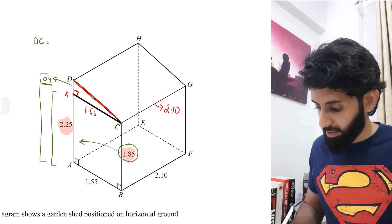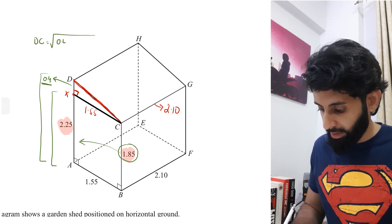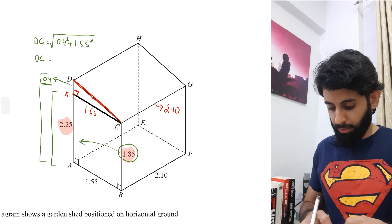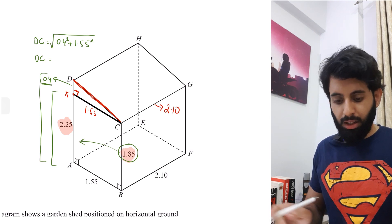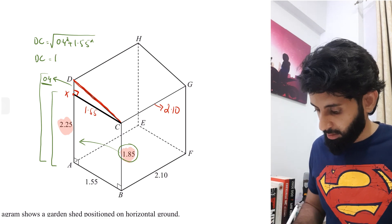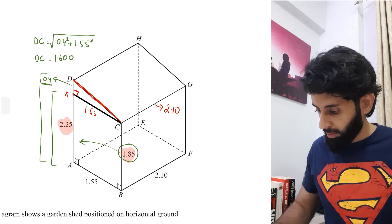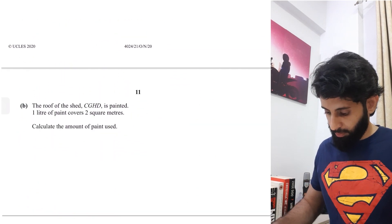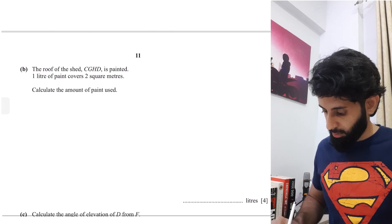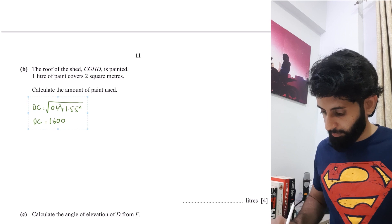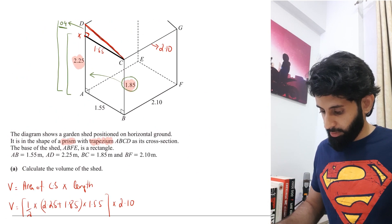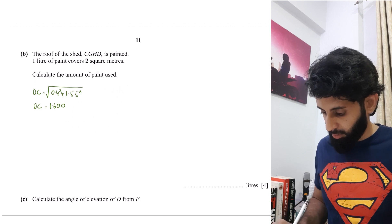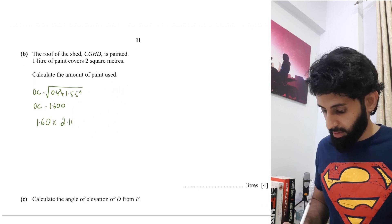Now DC is the hypotenuse of the right triangle with legs DX = 0.40 and CX = 1.55. So DC = √(0.40² + 1.55²) = √(0.16 + 2.4025) = 1.6007, approximately 1.600. The area of the roof = DC × CG = 1.600 × 2.10.